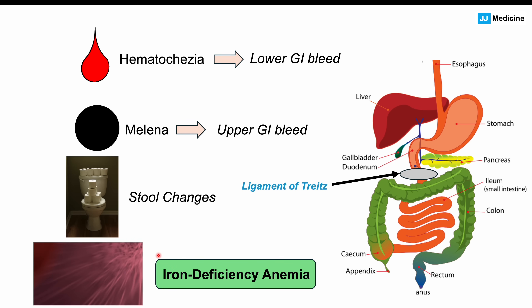Iron deficiency anemia is a very important finding in angiodysplasia because the bleeding is often not noticed by the patient. There is frequently occult — hidden — bleeding that is long-term and very subtle. Sometimes the angiodysplasias don't bleed at all, but slow subtle blood loss leads to iron deficiency anemia, which is actually the most common presentation of this condition.